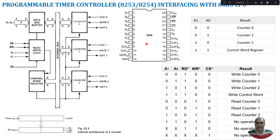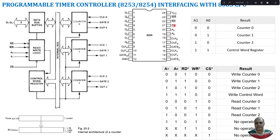The 8253 or 8254 is a 24-pin dual inline package IC. Pin numbers 1–8 are the D0 to D7 data lines, connected to the D0–D7 lines of your 8085 microprocessor. Pin numbers 9, 10, 11 relate to counter 0 — clock 0 and gate 0 are inputs, out 0 is the output. Pin 12 is ground, pin 24 is VCC. Pin numbers 13–15 relate to counter 1, and pin numbers 16–18 relate to counter 2. Pin numbers 19 and 20 are used for counter/control word register selection, there is a chip select line, and pins 22 and 23 are the read and write signals.